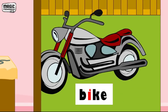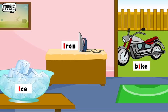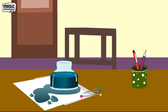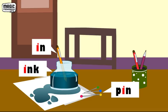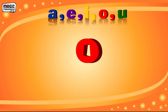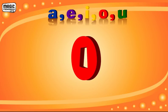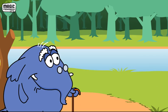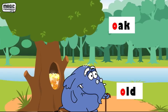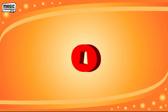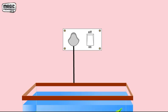Vowel I can be read as the long sound 'I', like in ice, iron, and bike. I can also be read as the short sound 'i', like in ink, in, and pin. Let's take the vowel O. O can be read as the long sound 'O', like in old, oak, and gold.